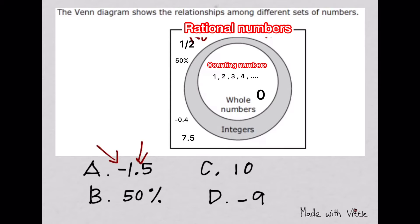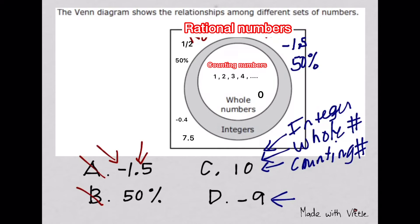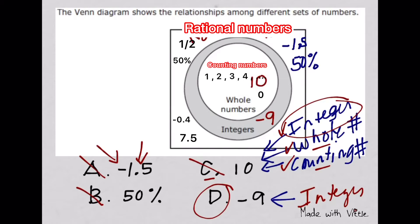Letter A is negative 1.5, a decimal, therefore you cannot call it a whole number or integer. It goes where it says rational numbers. Same with 50%. Number 10 on letter C can be called counting, whole, and part of the integers. But which specifically can be placed on the integer? It's negative 9, because it cannot be called counting or whole, but it is part of your number line. Therefore, it goes here where it says integers.